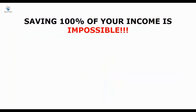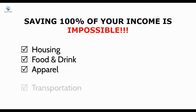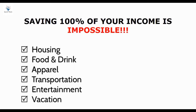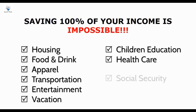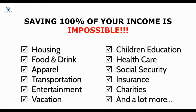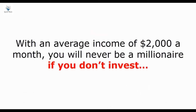But the fact is that saving 100% of your income is simply impossible. That's because you'll have to spend a lot on housing, food, apparel, transportation, entertainment, your family's vacation, your children's education, healthcare services, social security, insurance, charities, and a lot more. So with an average income of $2,000 a month, you will never be a millionaire. Now let's take a look at another situation so you can see exactly how investing can help you get wealthy without any extra effort.